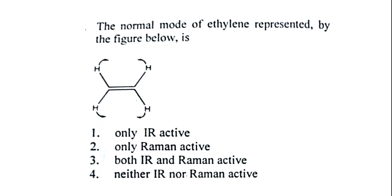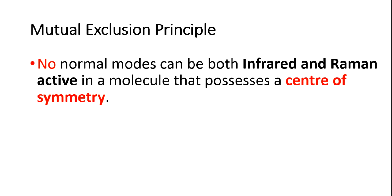Option four is neither IR nor Raman active. What is the mutual exclusion principle? It states that no normal modes can be both infrared and Raman active in a molecule that possesses a center of symmetry. For a centrosymmetric molecule, both IR active and Raman active modes cannot be possessed simultaneously.